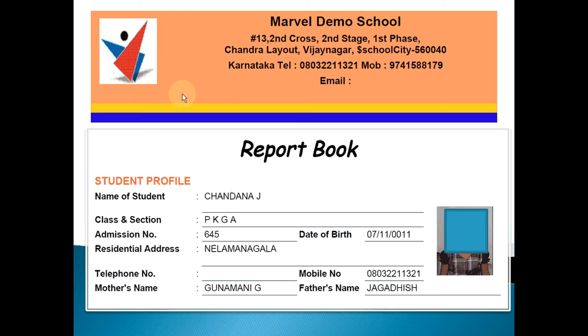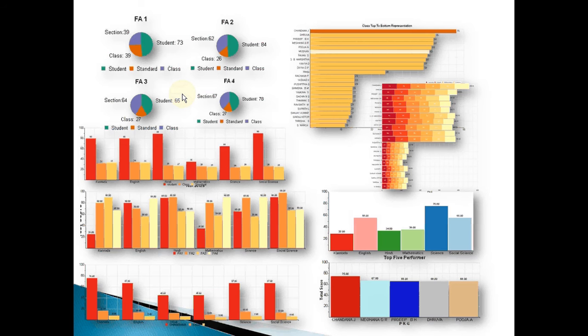Once the information is entered, there are various reports that you can generate in MarvelSoft School Admin ERP solution, such as you will be able to find out the toppers in the class and how each and every student is performing in each subject — with the highest scorers listed first and the students who are non-performers at the bottom of the graph.